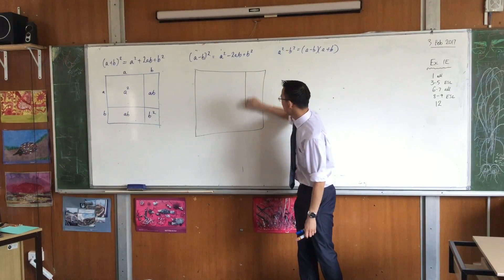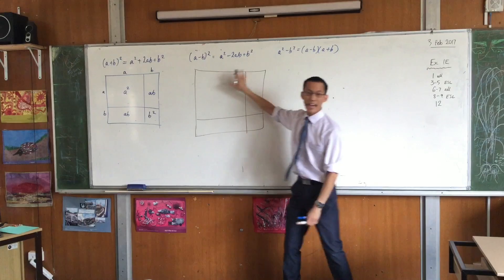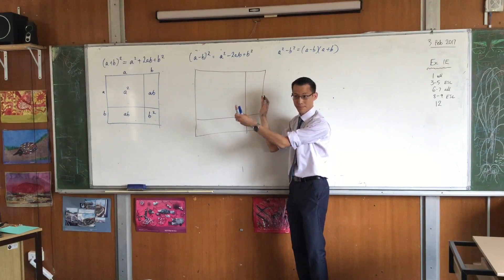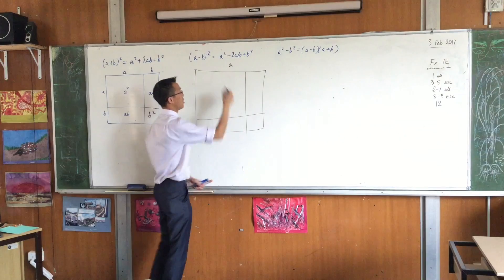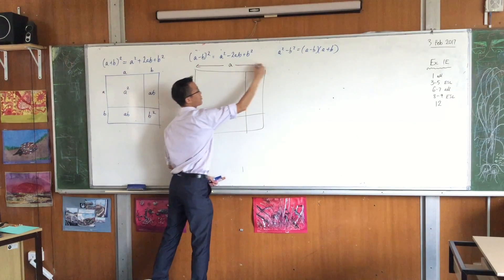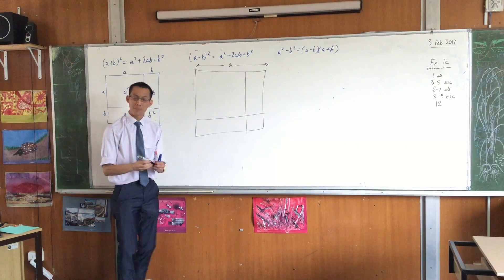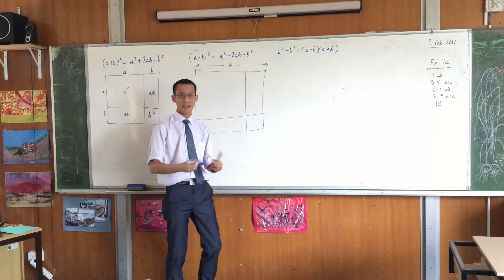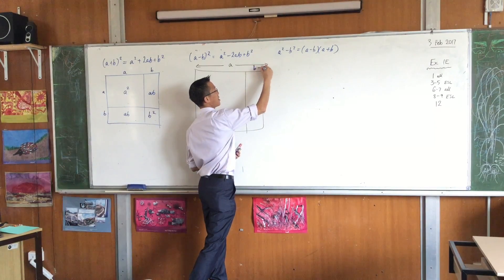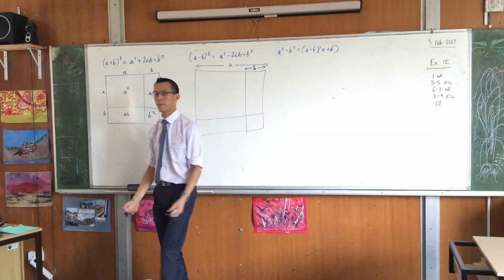So rather than have a and b and then add them together, instead what I'm going to have is a going all the way across the top. There's a, which means I'm going to have b kind of hanging over there on the side just like before, but it's subtracted, right? So if this is b, where in my diagram is a minus b?